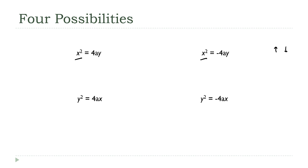If your equation has a y squared term, then your parabola opens left and right. If the a part is positive, it opens up or to the right. And if the a part is negative, it opens down or to the left.